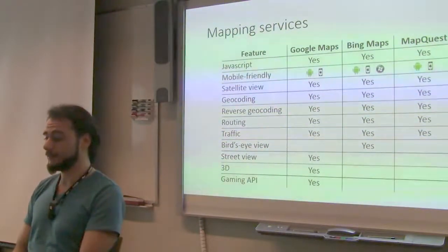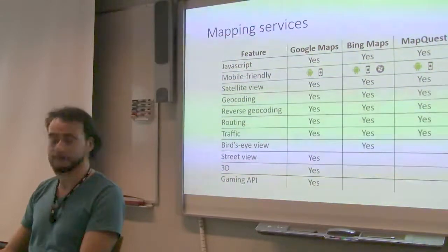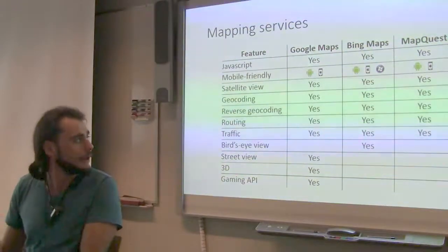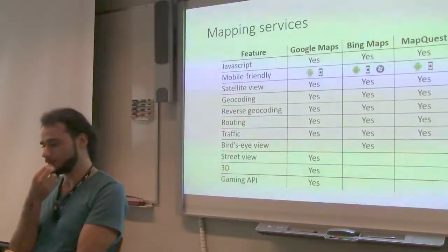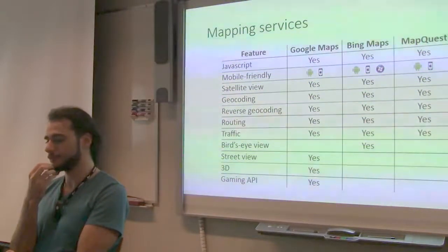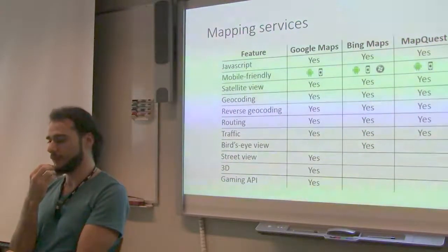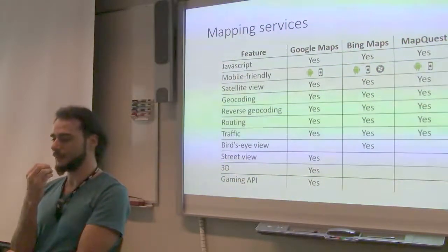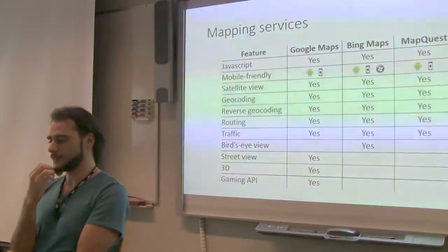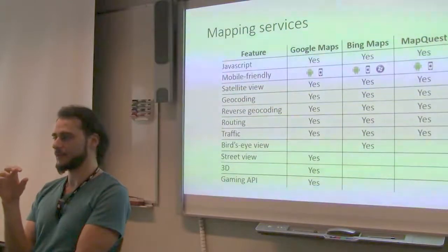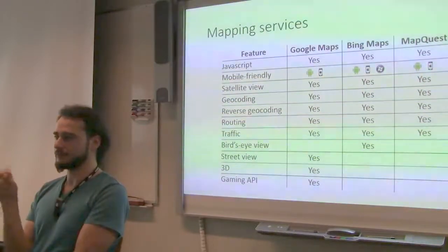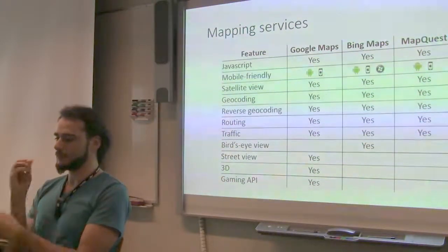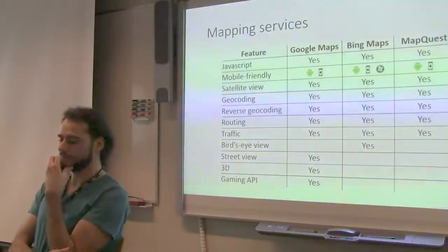So let's see what the features are. All of the map services have this JavaScript feature — you can develop for them using JavaScript. They all seem to be mobile friendly. Native support exists for Android and iPhone at least; Bing Maps has this Windows Phone exception. All of them seem to have basic features such as satellite view — you are able to see how it looks from above without any semantic objects. Satellite view is just a picture that you get from above.